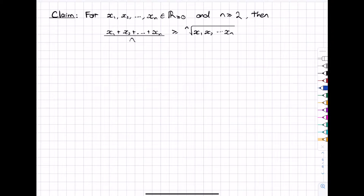In this video we're going to prove the n-variable arithmetic mean geometric mean inequality, and the method we're going to use is called Cauchy induction. Cauchy induction differs a little bit from the regular induction or the standard induction that we come across in the HSC course. Before we get into the proof, it's probably a good idea to flesh out what the steps are for Cauchy induction, try to see why it actually works, and then we'll get into the proof.